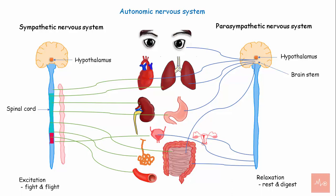The sympathetic division of the ANS is under the influence of the lateral and posterior nuclei of the hypothalamus, while the parasympathetic division of the ANS is under the influence of the anterior nuclei of the hypothalamus.